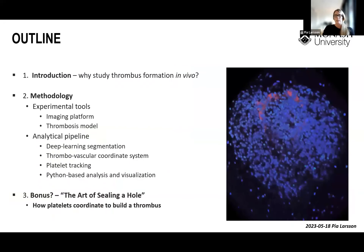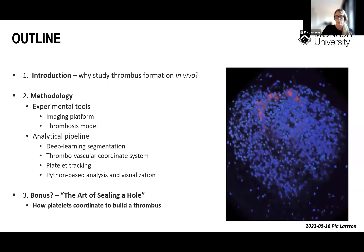Just a brief outline of the talk today. I will start by giving an introduction about why we think it's important to study thrombus formation in vivo. Then I will go through the methodology, focusing on both the experimental side — the imaging platform and thrombosis model — and the analytical pipeline, which has four parts: deep learning segmentation, the thrombovascular coordinate system, platelet tracking, and the Python-based analysis and visualization tools. If time allows, there may be a bonus section describing what Abby is doing at the moment about how platelets coordinate in three-dimensional space to build a thrombus.